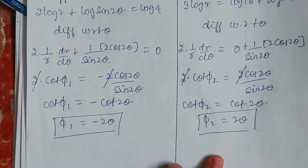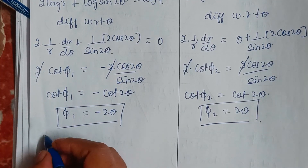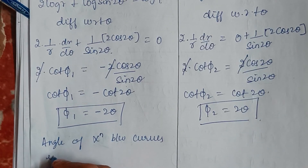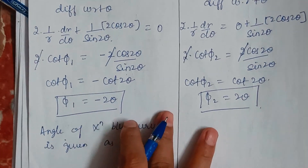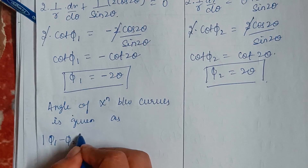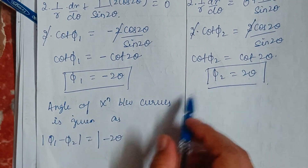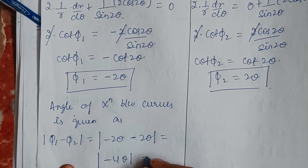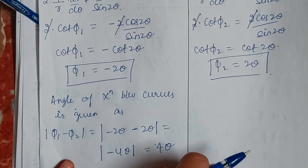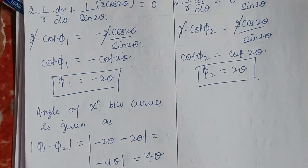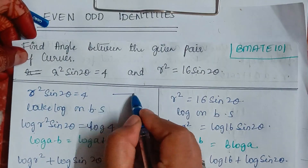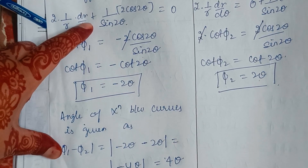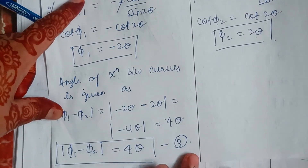The angle of intersection between the curves is given by |φ₁ − φ₂|. With φ₁ = −2θ and φ₂ = 2θ, this becomes |−2θ − 2θ| = |−4θ| = 4θ. We'll keep this as equation 3.